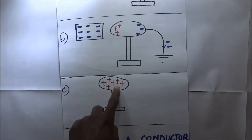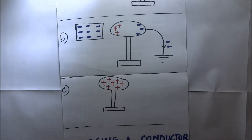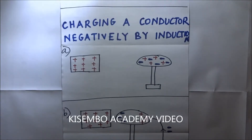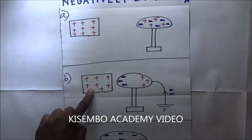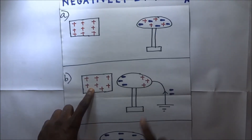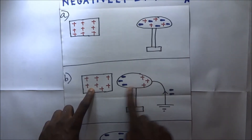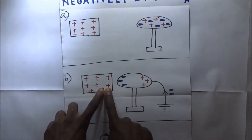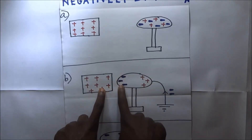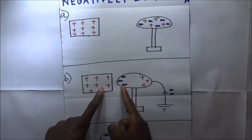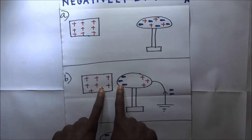This means the conductor has been positively charged by induction. To charge negatively by induction, we take a positively charged body and bring it in the vicinity of the neutral conductor. These positive charges are going to attract the negative charges within the conductor, so the negative charges will be attracted to the near side of the conductor.